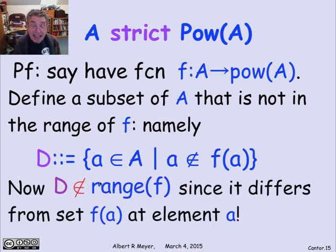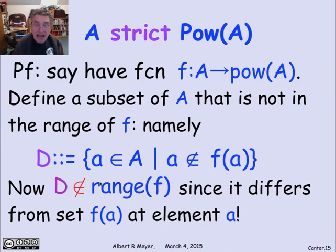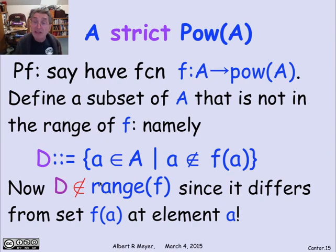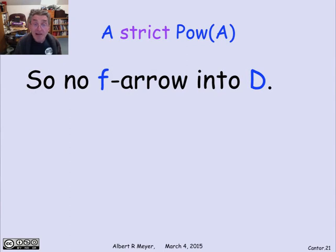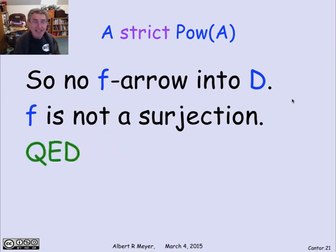What I know about D is that it is not in the range of f, because it differs from every possible row of the matrix. If the row is labeled f(a), then D differs from that row in column a — by construction, a is in D if and only if a is not in f(a). Therefore D is not equal to f of anything. There's no f-arrow into D; D is not in the range of f. Since this holds for any function f from A to the power set of A, none of them are surjections. There's no surjection from A to the power set of A — i.e., A strict power-set(A).